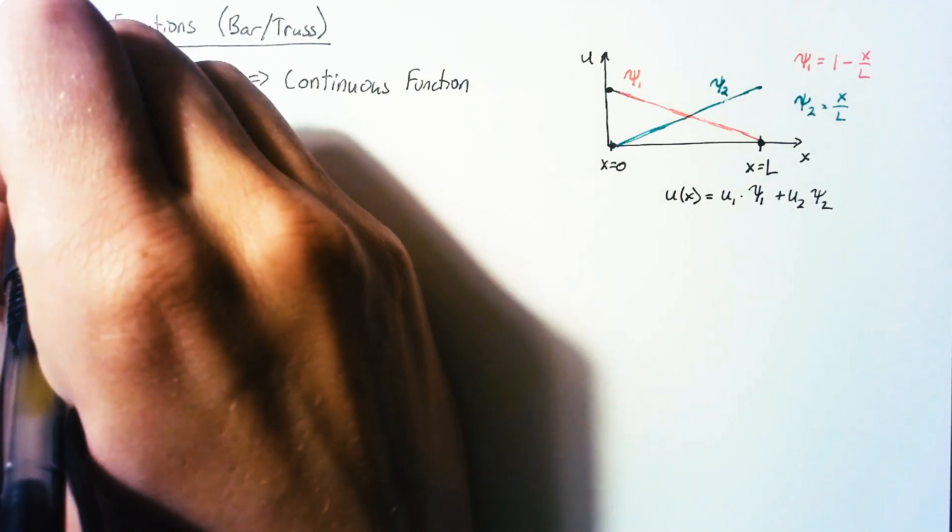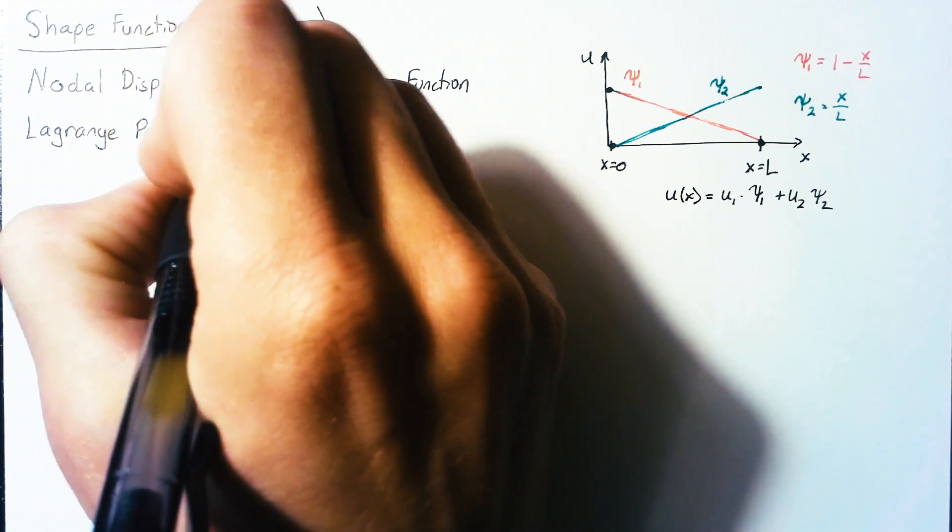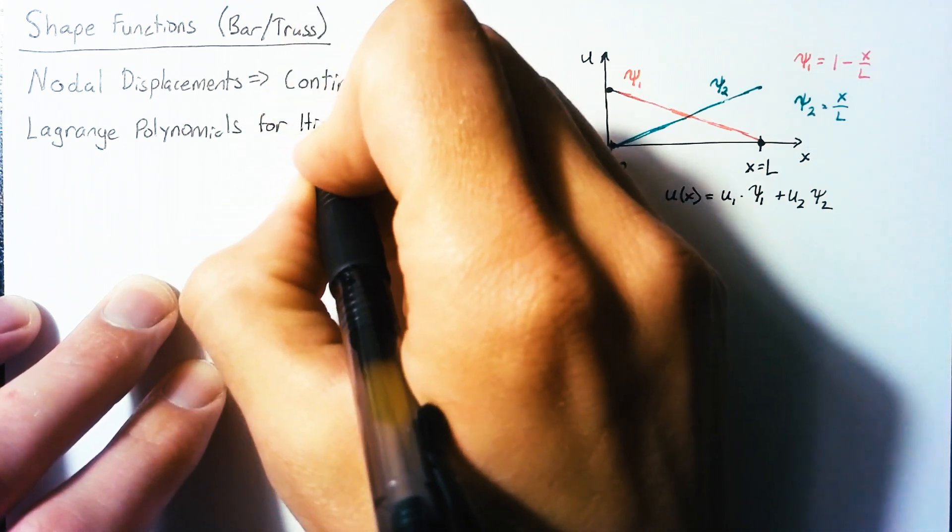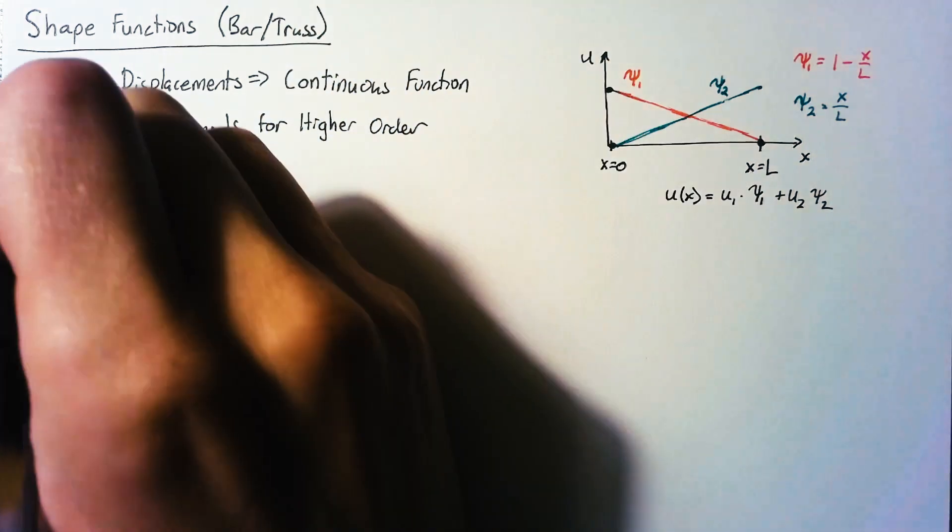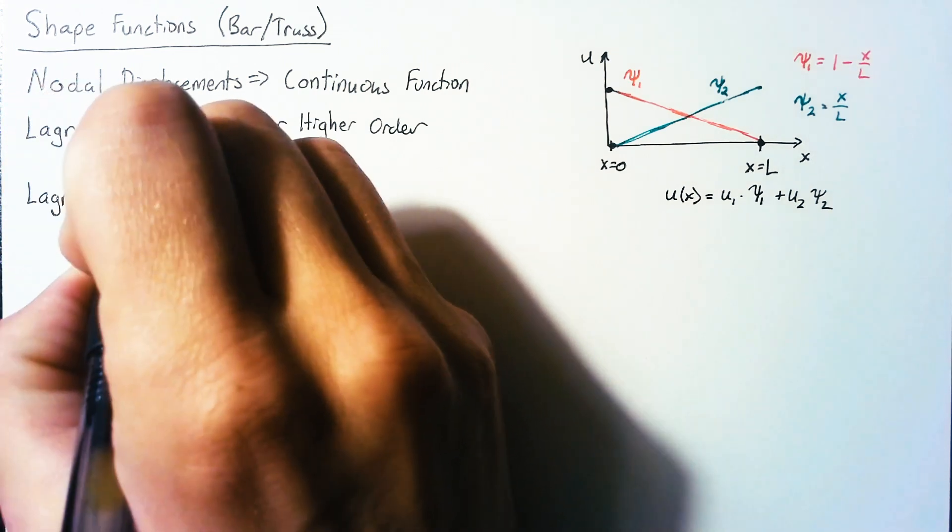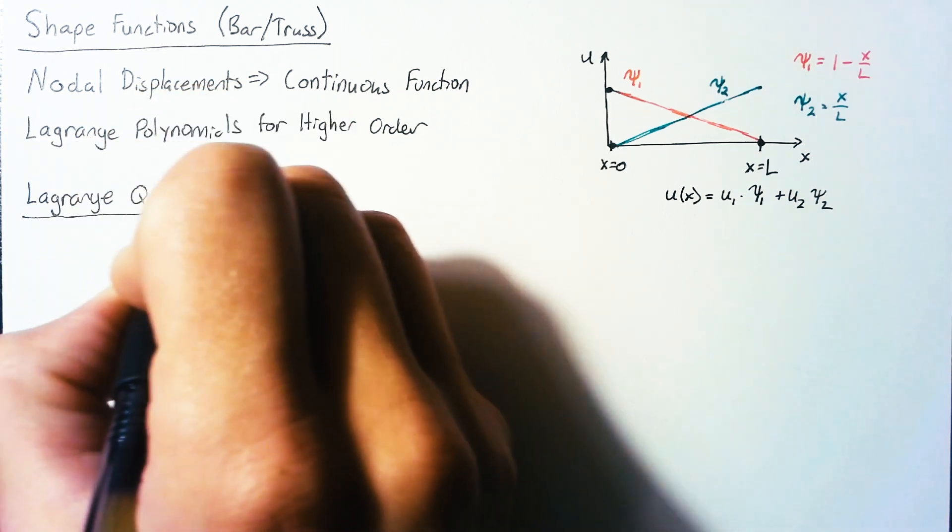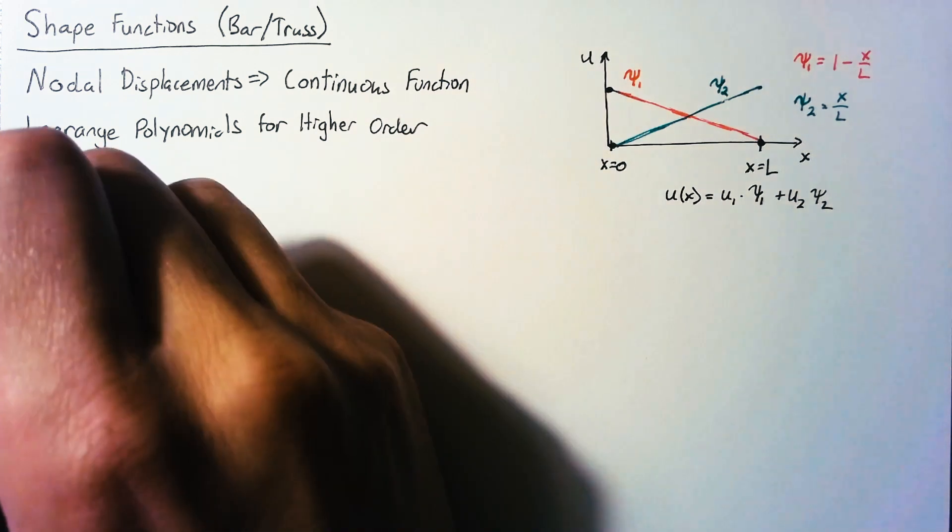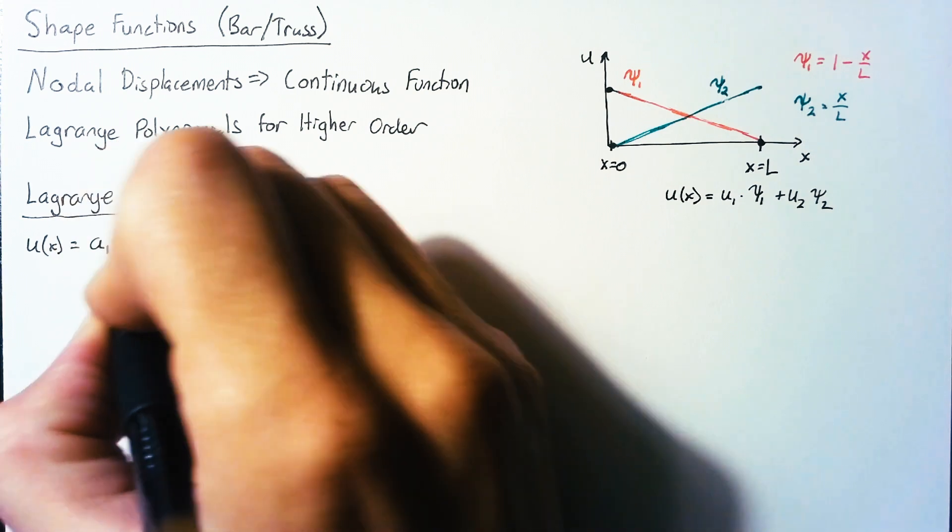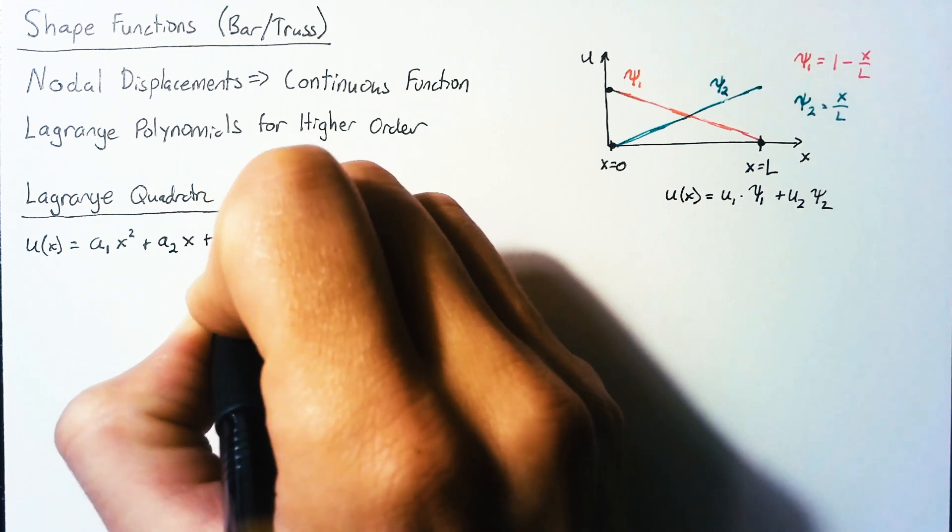Now if we want to go more complex, we can look to a set of polynomials known as the Lagrange polynomials. We want to use this any time that we're trying to create higher order elements. In this video, we're just going to go one step above our linear and look at the Lagrange quadratic. All I mean by that is this is the Lagrange polynomial that has a maximum order of 2. So u of x is going to be some coefficient multiplied by x squared plus some coefficient multiplied by x plus some coefficient multiplied by 1.